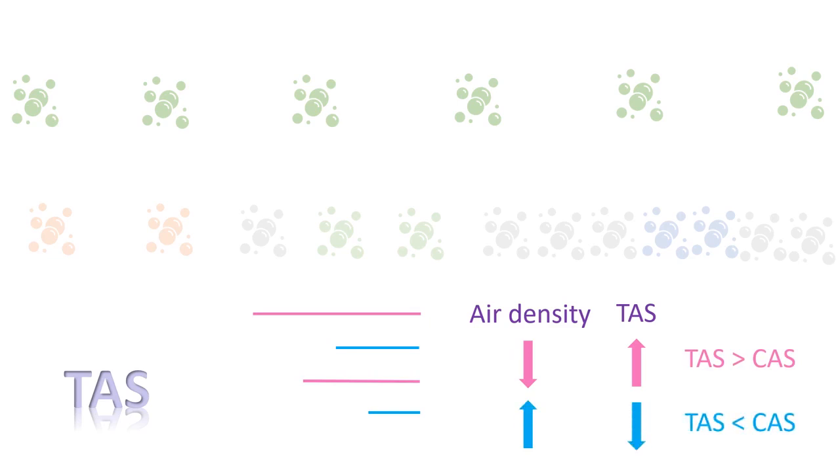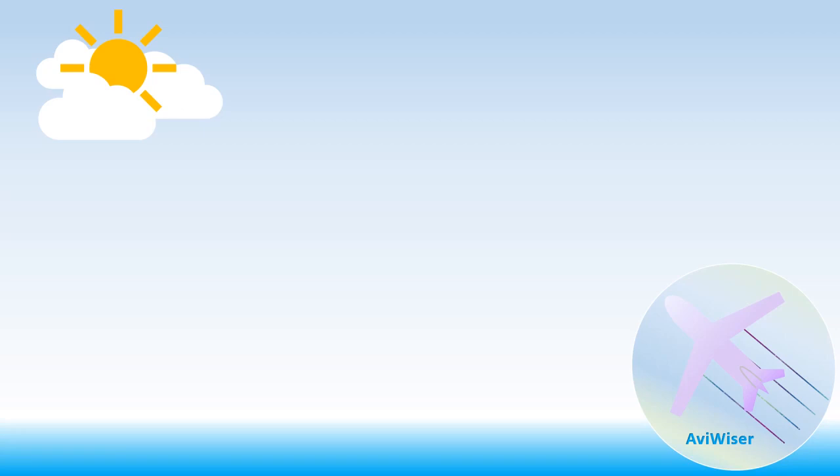On the other hand, when air density increases, calibrated airspeed falls behind true airspeed. Roughly, true airspeed increases by 2% compared to calibrated airspeed for every 1,000 foot rise in altitude. To get a more accurate true airspeed, whip out a flight computer. Cool, those are the three airspeed types.